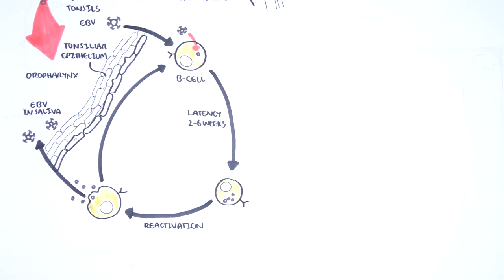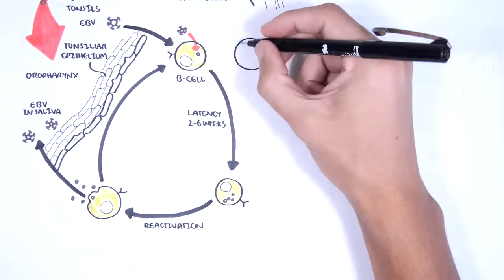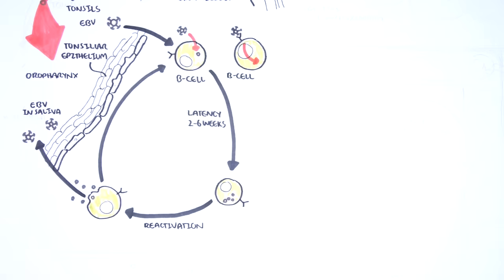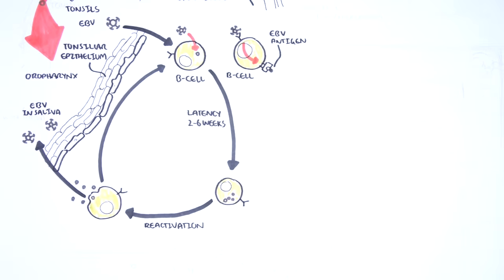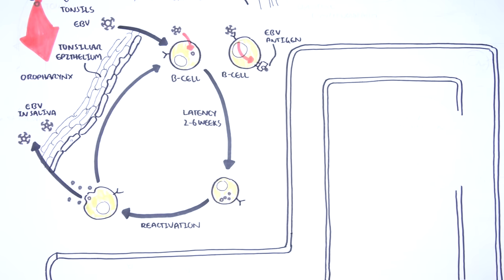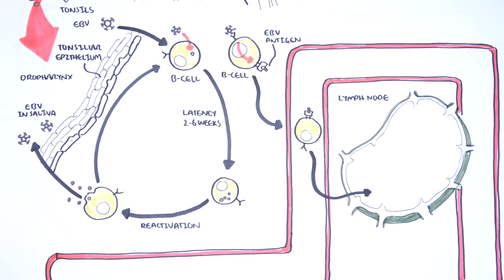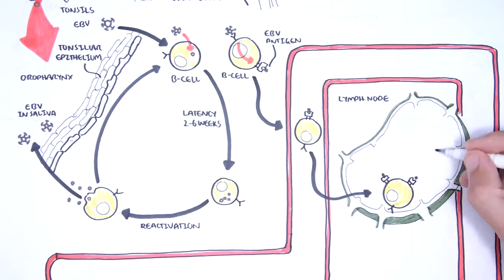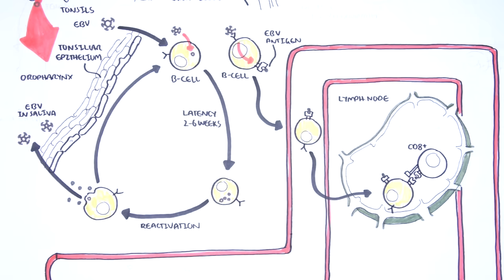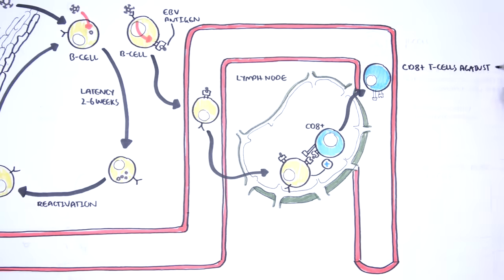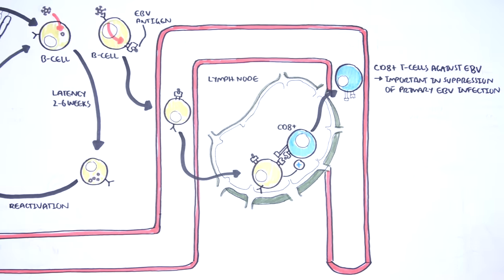During this incubation and reactivation time, the immune system is responding. The Epstein-Barr virus induces an immune response whereby the B cells — your antibody-producing cells — capture the Epstein-Barr virus antigen and process it. The B cells can mount an immune response locally in the tonsils, and can enter circulation to mount an immune response in the lymph nodes, spleen, and liver. Here, the B cells stimulate CD8 T cell activity. CD8 T cells, also known as cytotoxic T cells, are important in the suppression of primary Epstein-Barr virus infection.